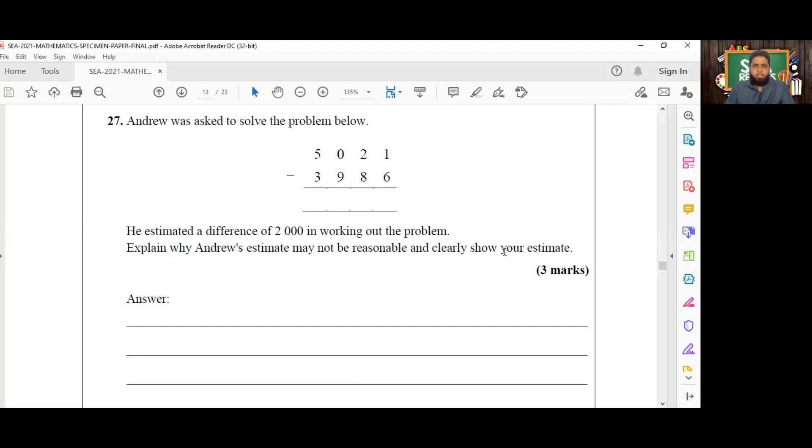Andrew estimated here a difference of 2,000. So it would appear that Andrew looked only at the digits occupying the thousands place and subtracted 3 from 5, and he got 2. So he estimated 2,000, but that is not reasonable, and we'll demonstrate why.